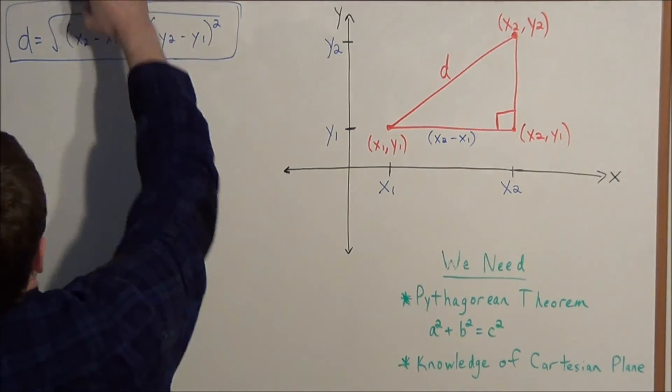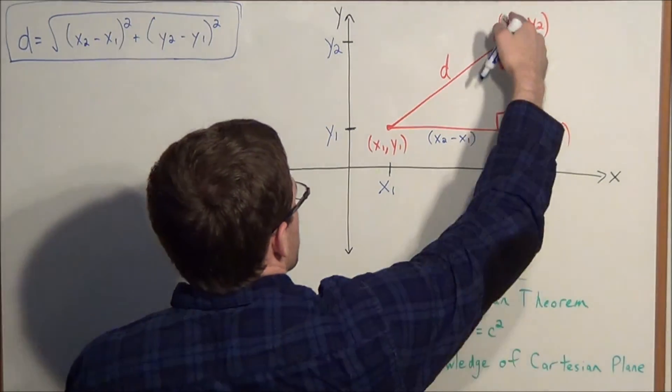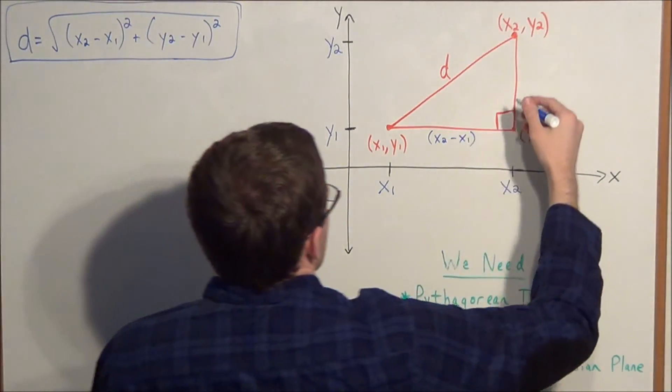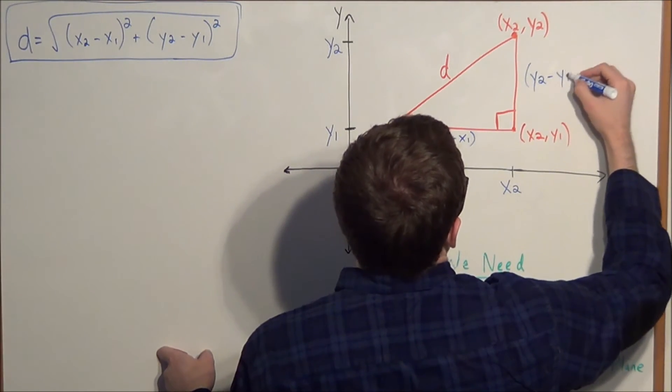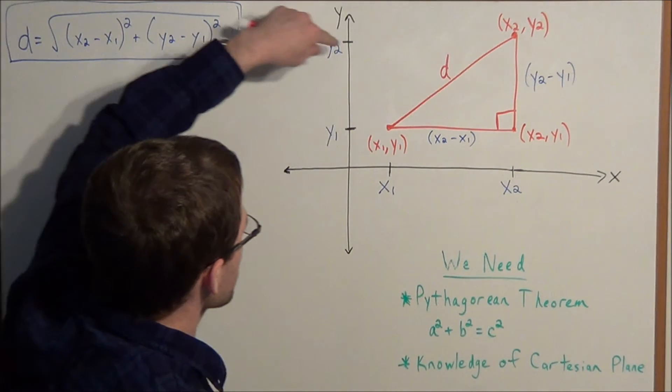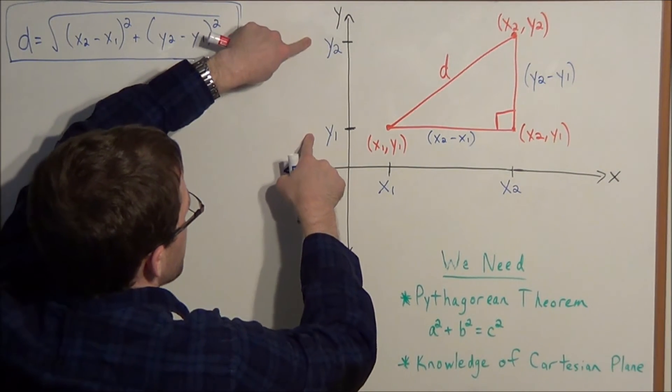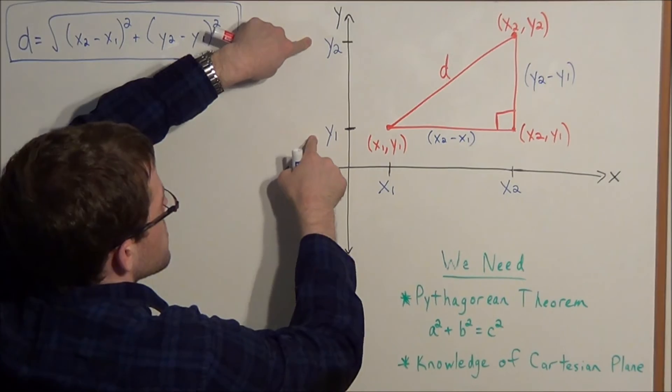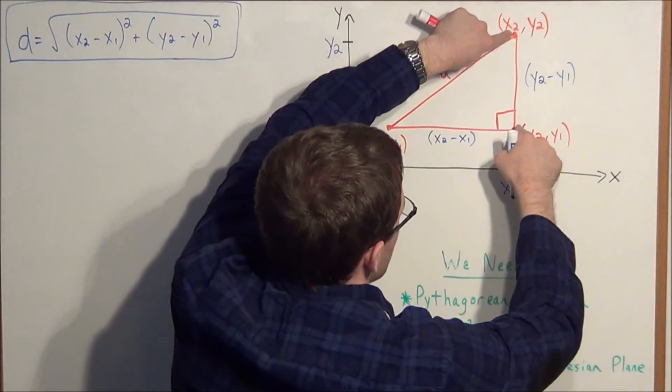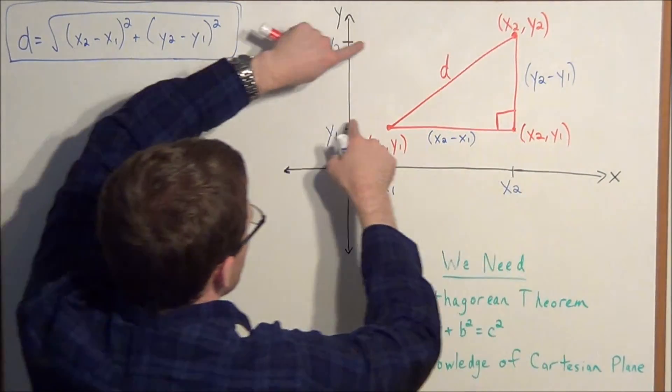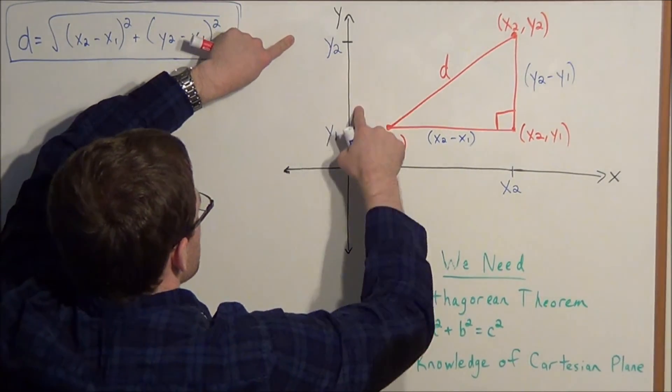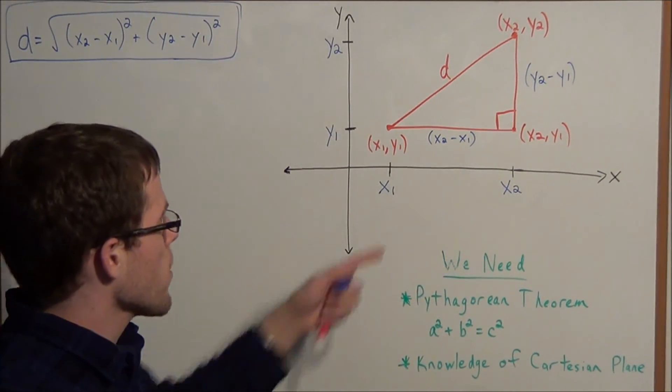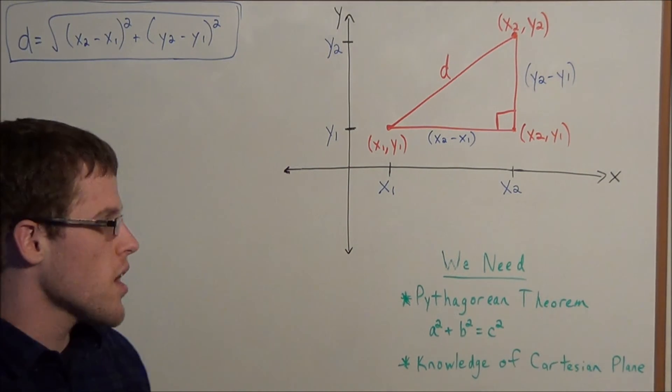So by that same argument we could call this missing vertical leg y2 minus y1. Because this vertical leg is sandwiched between the two y coordinates y2 and y1. So the distance or the length of this leg is simply y2 minus y1. Which tells us the distance between these two coordinates here. So now we have a right triangle and we have three sides of the right triangle.